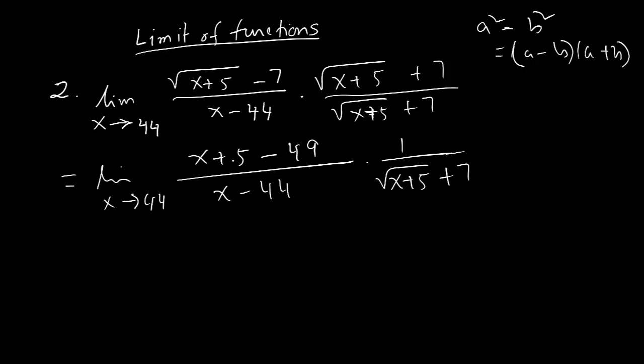Now if you look at here, x plus 5 minus 49, which is actually x minus 44, is x minus 44. They will cancel out. When you replace here 44 for x, you get 44 plus 5 plus 7, so which is 1 over 7 plus 7 is 1 over 14. You are done for this.